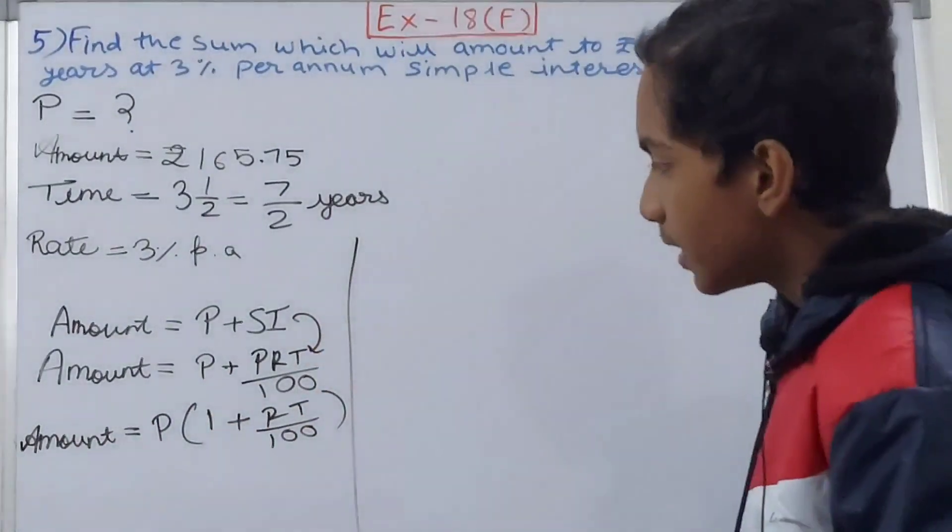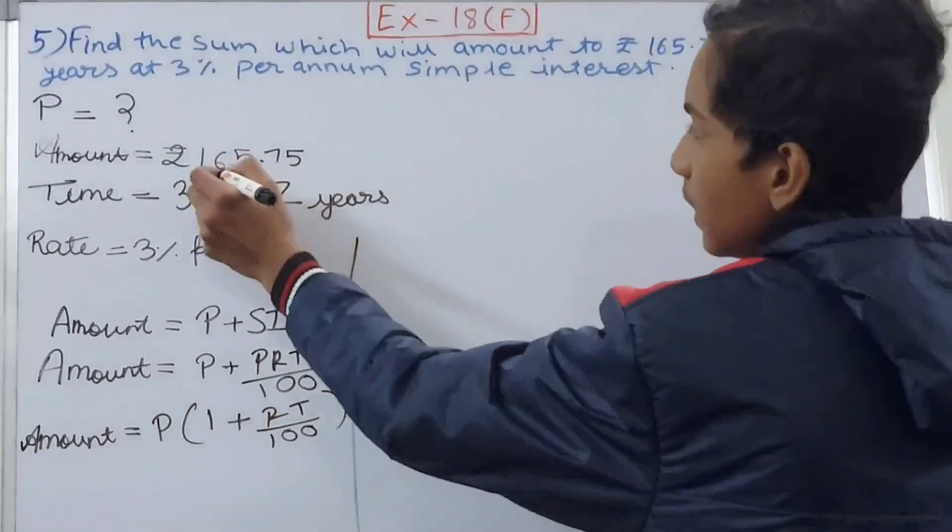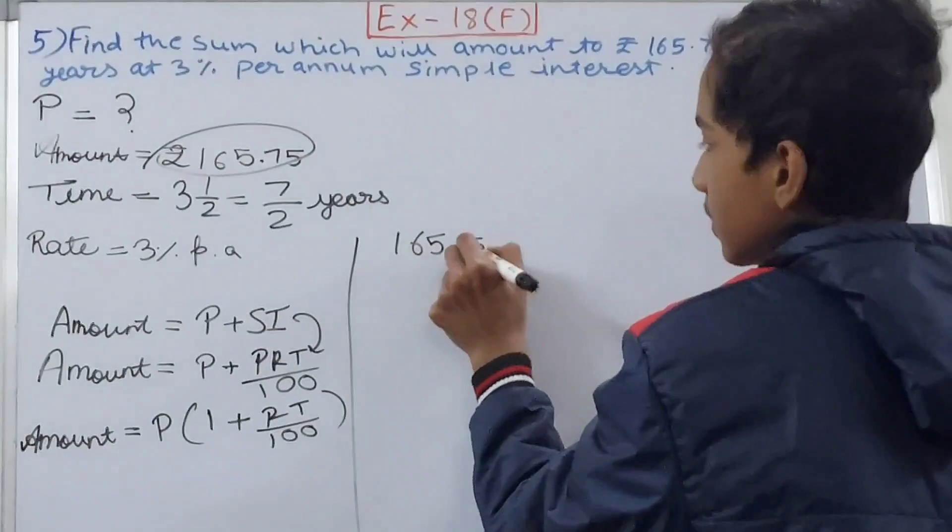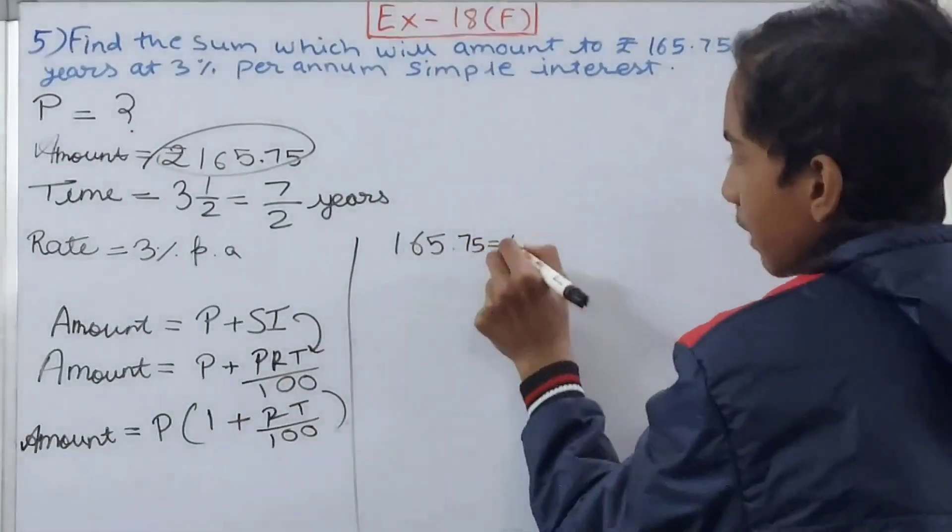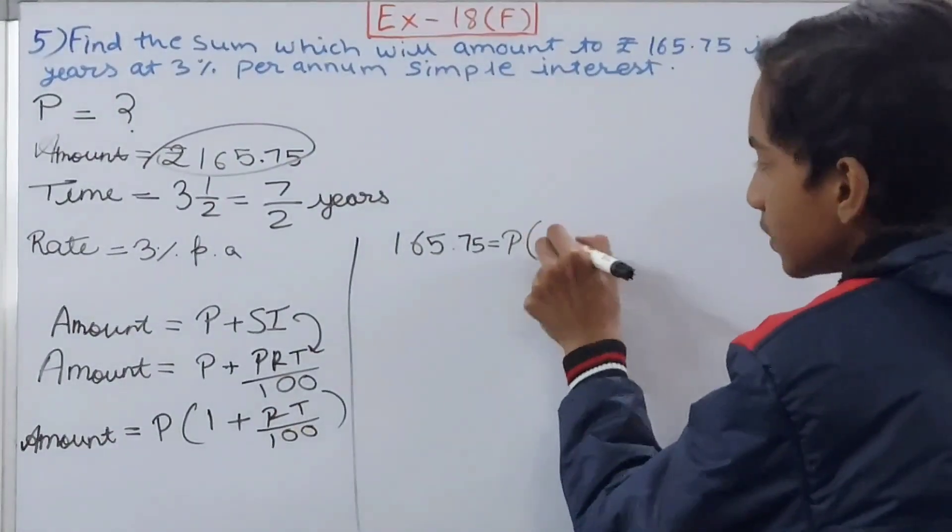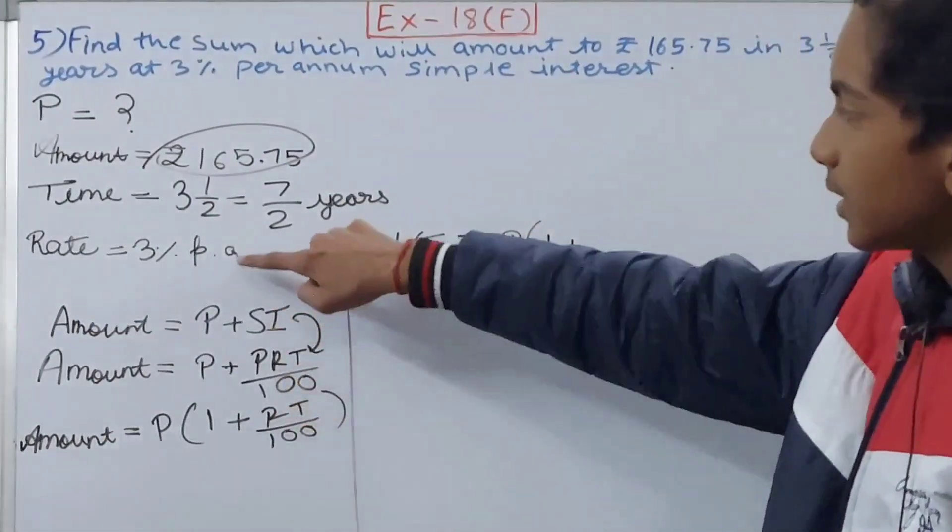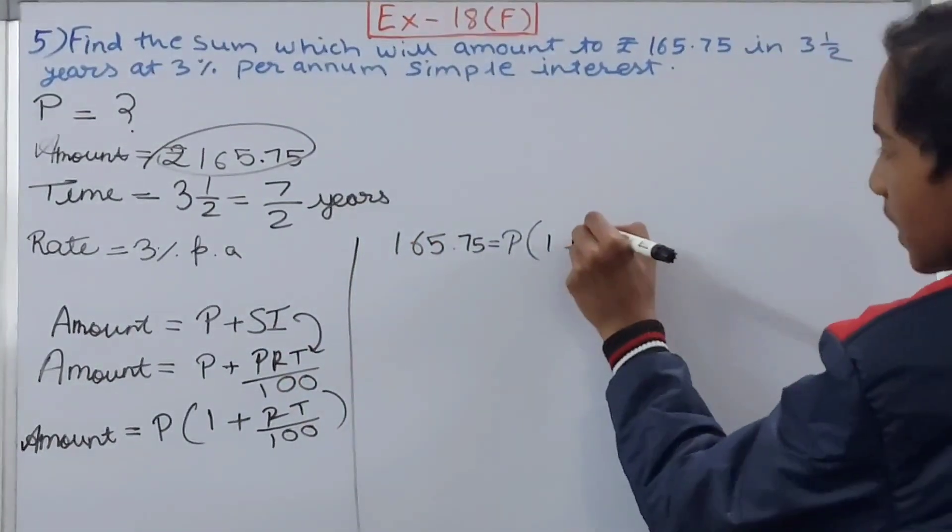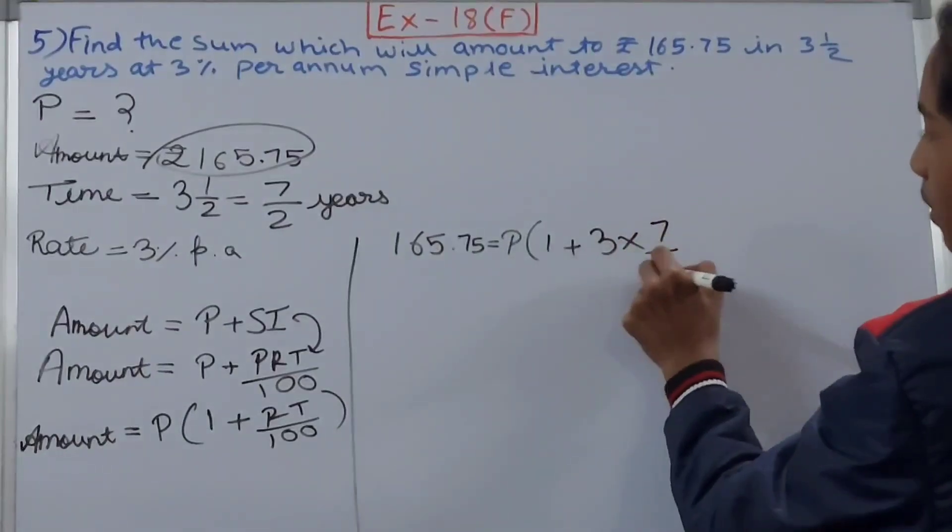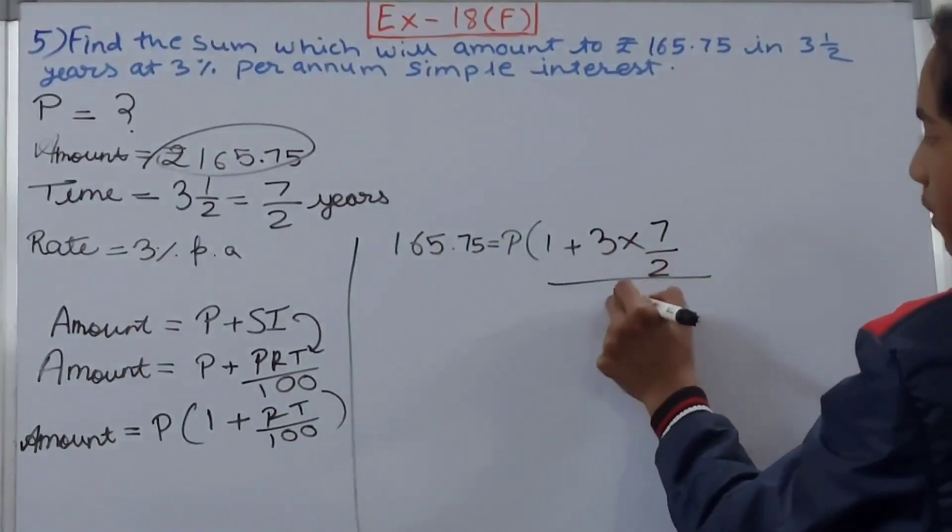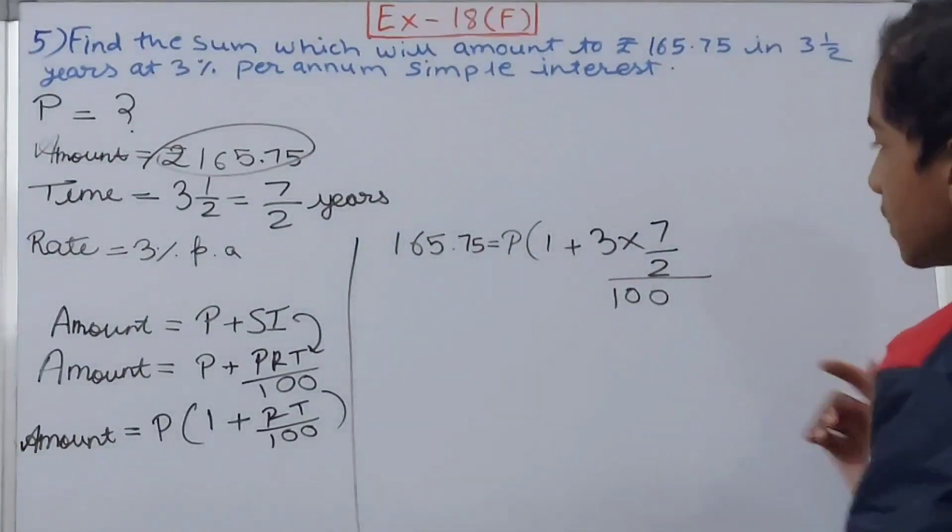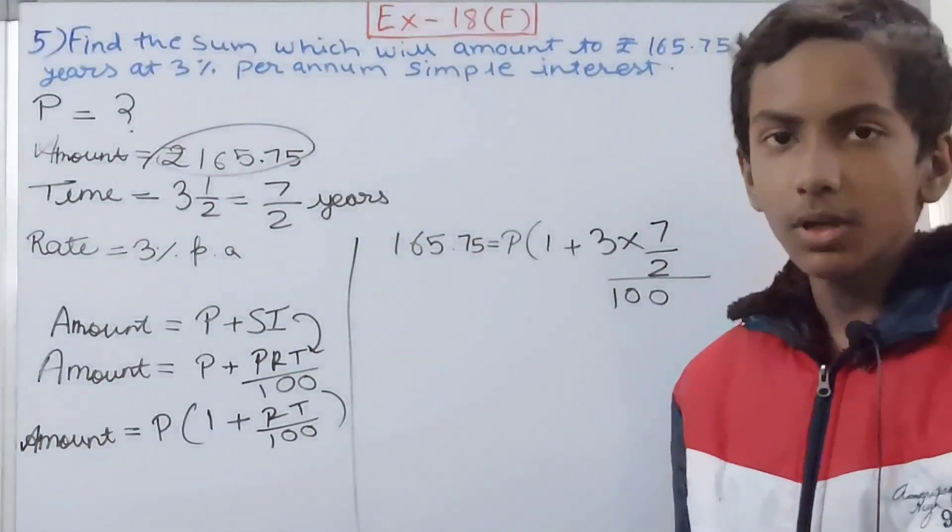Now with this we'll find our principle. Amount we know is 165.75, so substitute it: 165.75 equals P times (1 + 3×7/2÷100). We do not know the principle, so keep it as P. R is the rate, that is 3% per annum, so 3 into T. T is time, 7/2, upon 100.